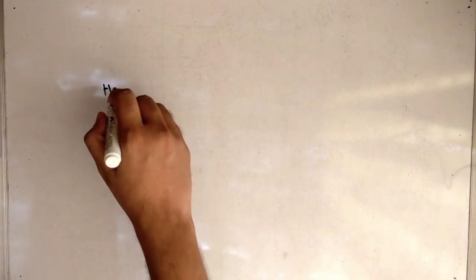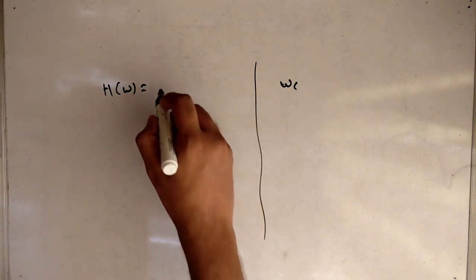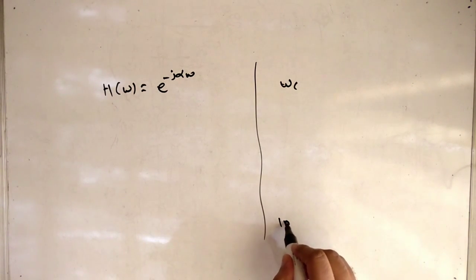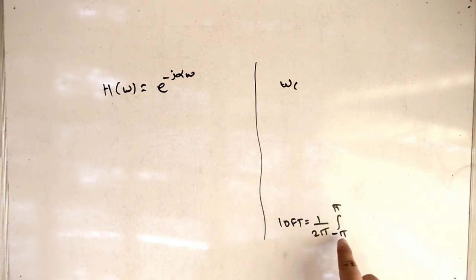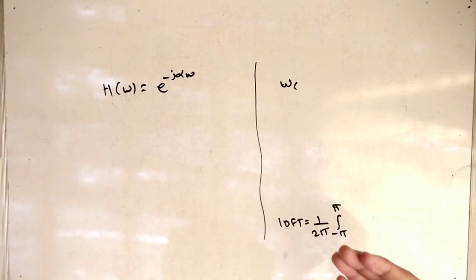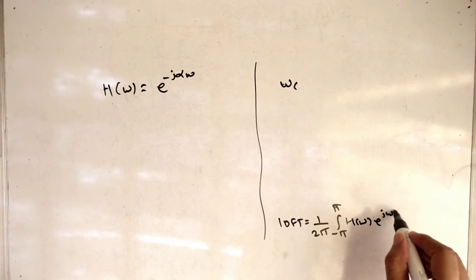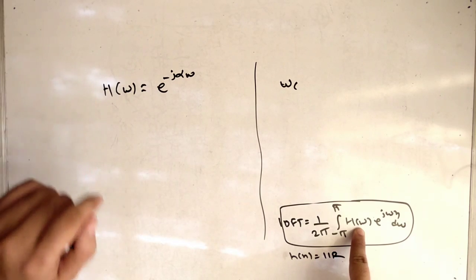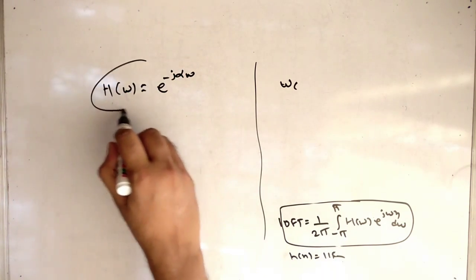Let's see the relation between them. The first step is finding H of Omega and finding cutoff frequency. H of Omega is E raised to minus J alpha Omega. With the cutoff frequency, we use the IDFT formula: 1 by 2 pi, integral from minus omega C to omega C of H of Omega E raised to J Omega N D Omega. Using this integral we can get H of N, which is IIR.